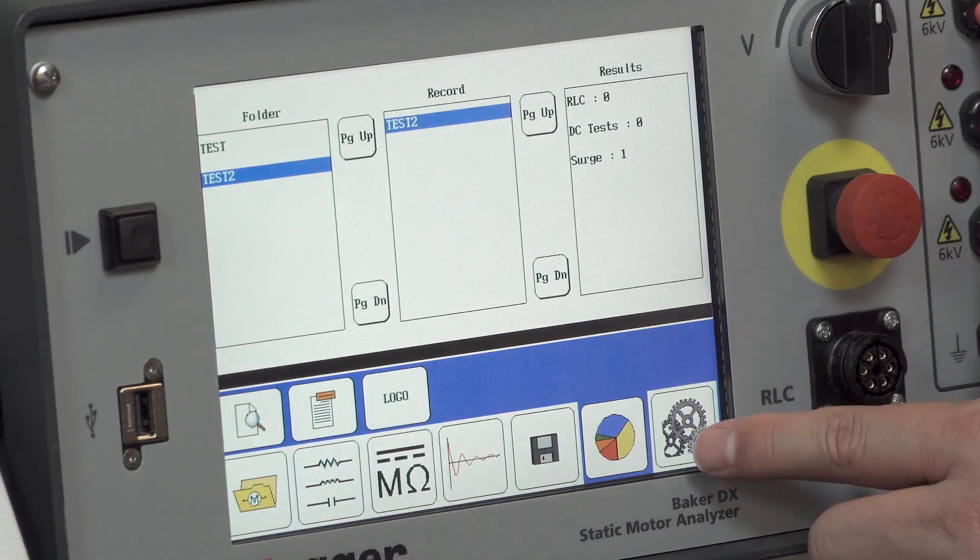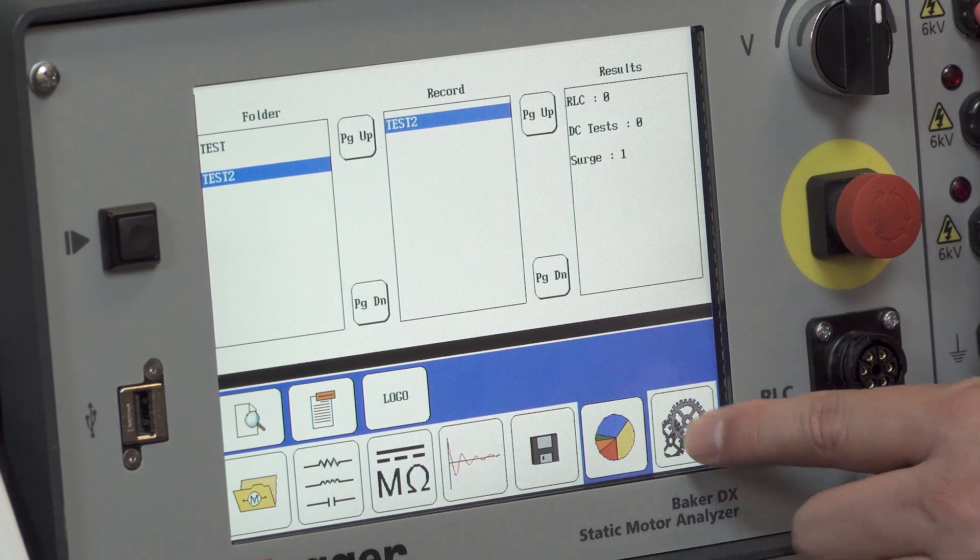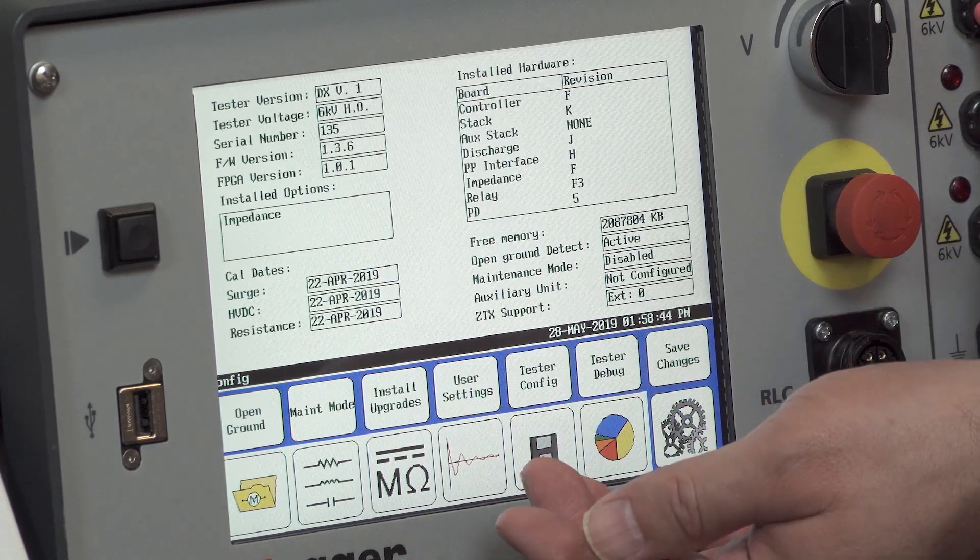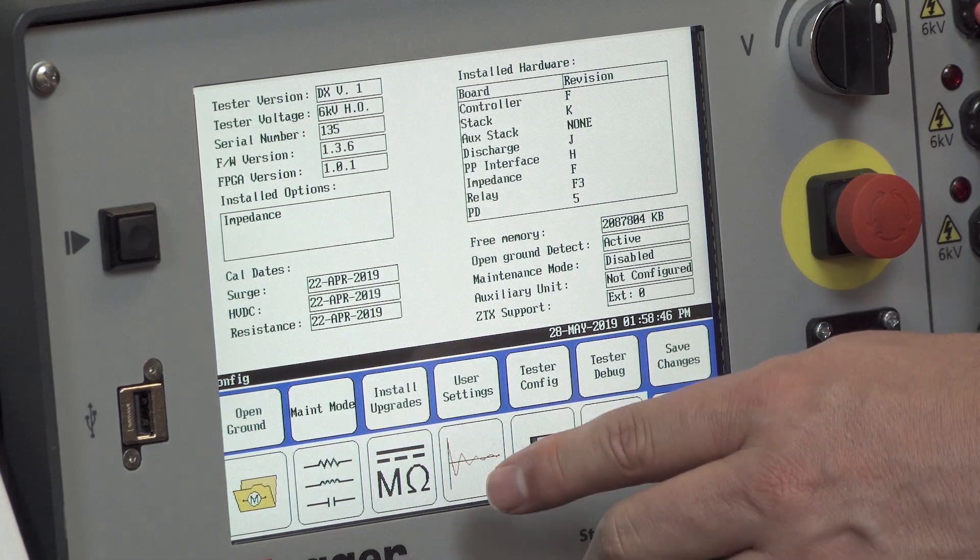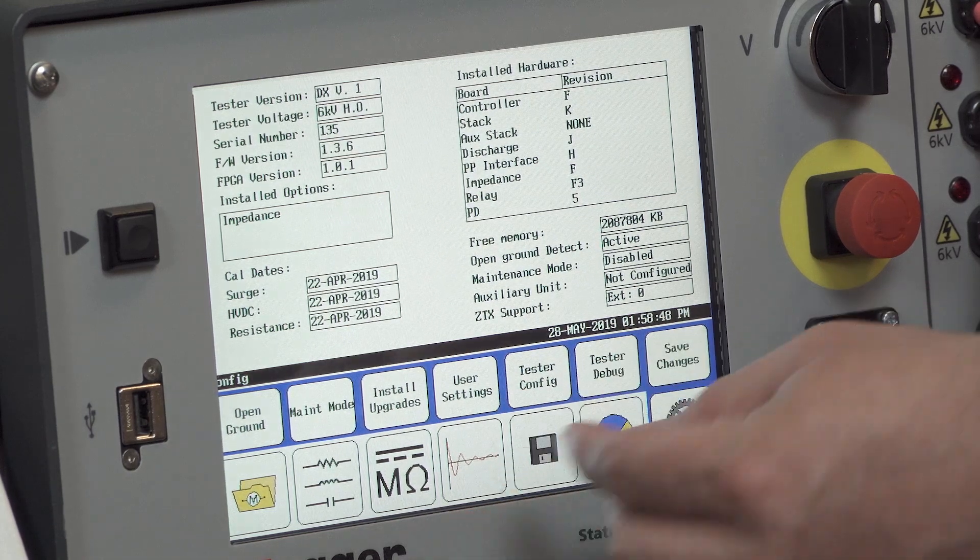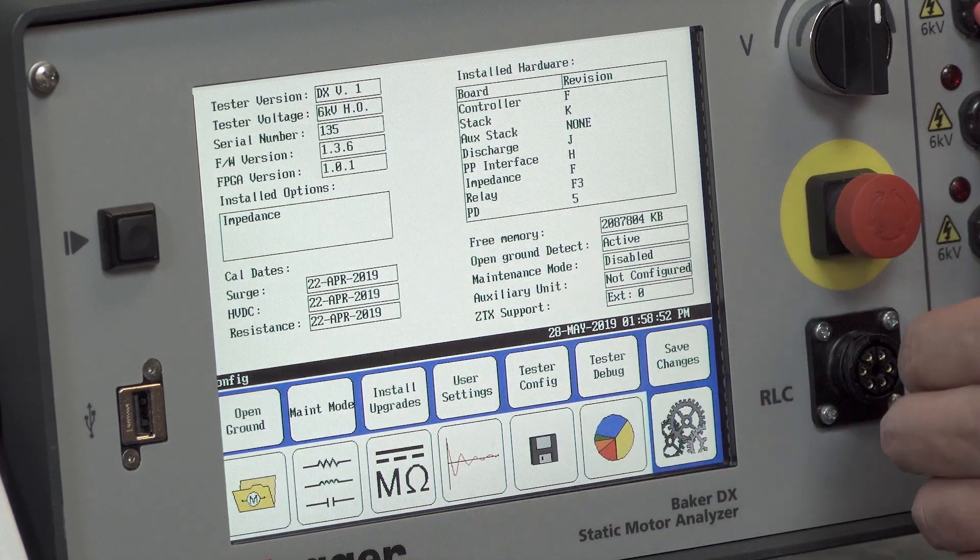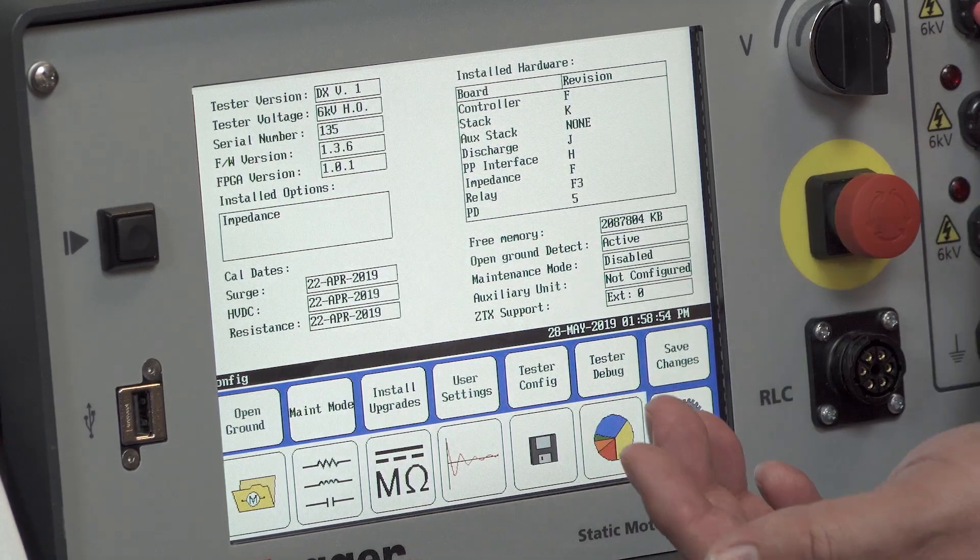The final icon is for tester settings. Once selected, it allows you to have access to controls for the user, as well as factory settings and calibration or tester configuration. Depending on your level of access, you'll have different options available to you.